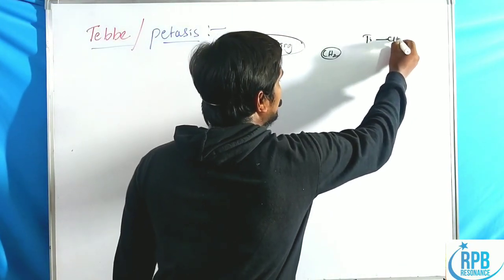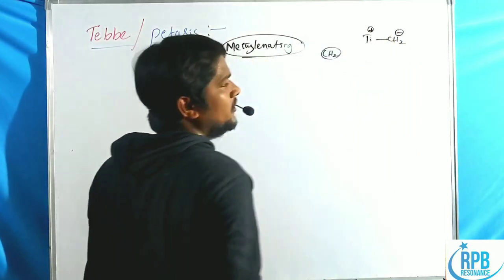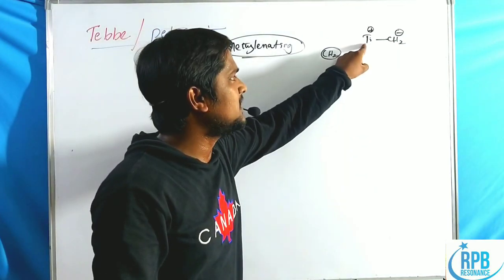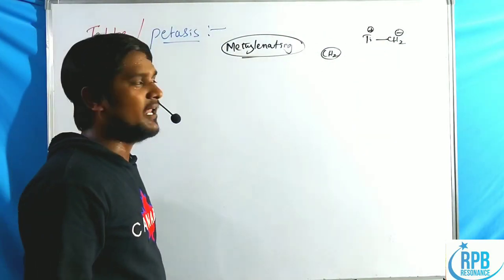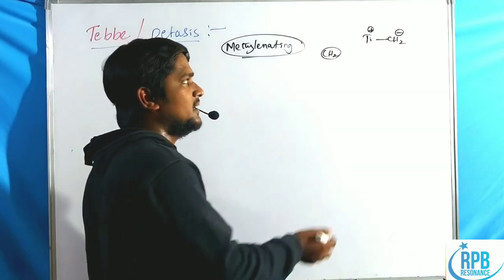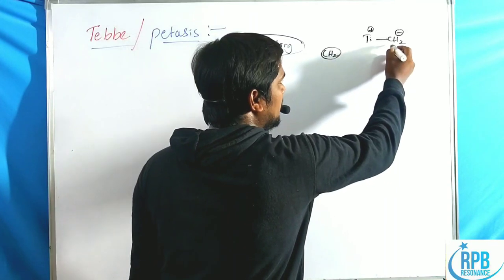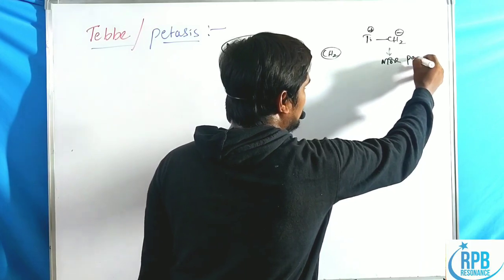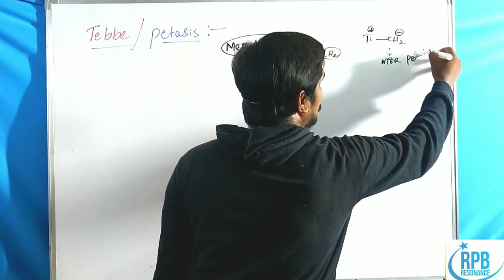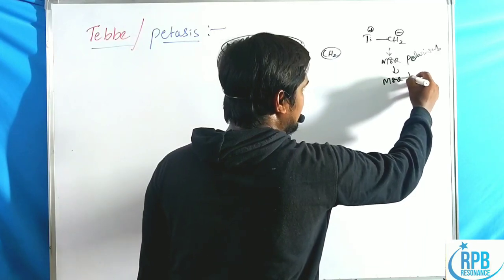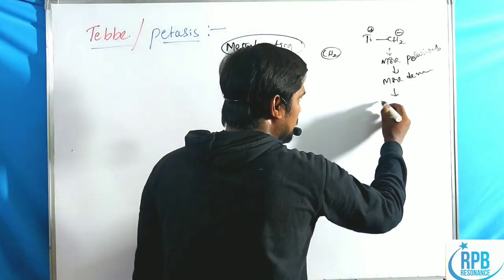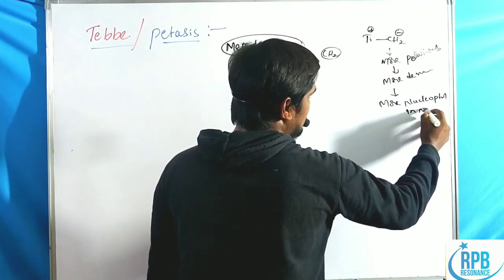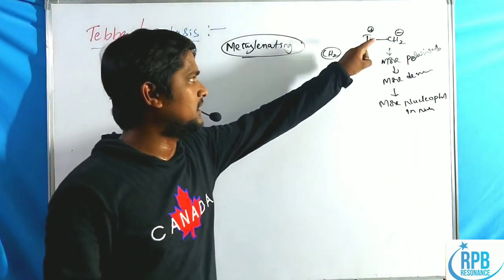In this reaction, we use a titanium–CH₂⁻ complex. Titanium has less electronegativity, but CH₂⁻ is highly electronegative, making the complex more polarizable and having the highest electron density. This makes the titanium alkylidene complex highly nucleophilic in nature.